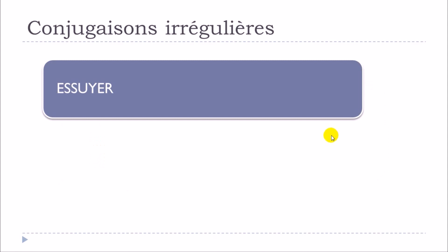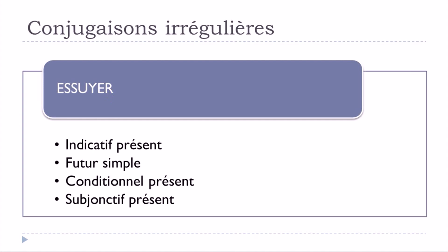I wanted to take a simple verb. The verb is essuyer, which means 'to wipe.' We'll see that this verb, like the others that end with U, Y, E, R, will change a little bit. Even if it's a regular verb belonging to the first group of verbs ending with E, R, a few modifications will be found.